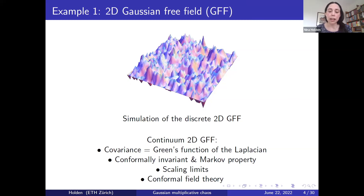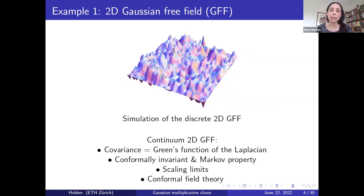When the lattice size goes to zero, this discrete function converges, viewed as a distribution, to the continuum 2D Gaussian Free Field. The continuum 2D GFF is also important because it arises in several constructions in conformal field theory.